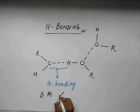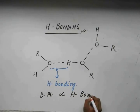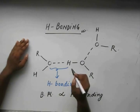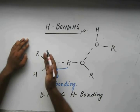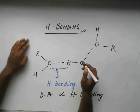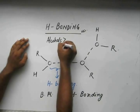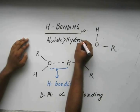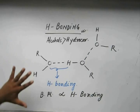Boiling point is directly proportional to hydrogen bonding. The more hydrogen bonding a molecule has, the greater is the boiling point. This is the reason why alcohols have a higher boiling point than corresponding hydrocarbons — alcohols have a higher boiling point than corresponding hydrocarbons because of hydrogen bonding.